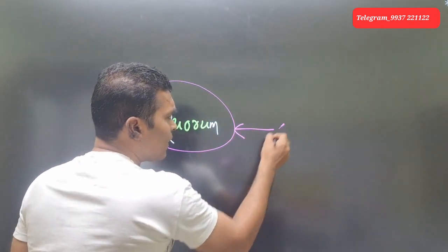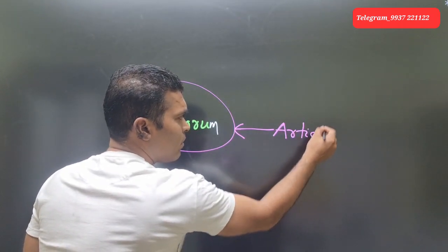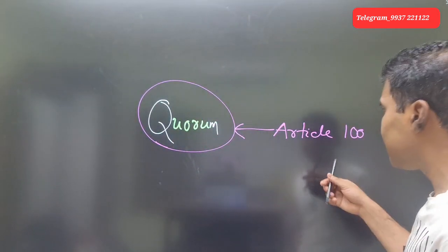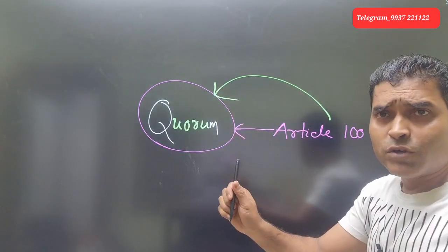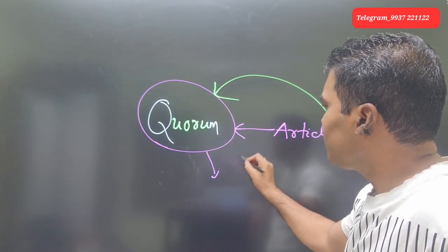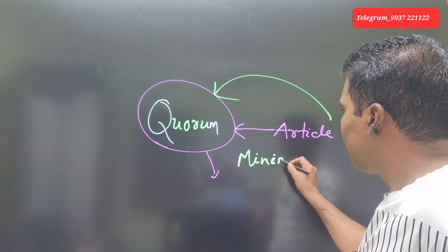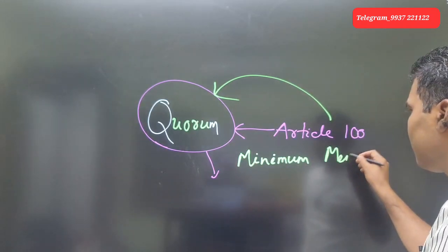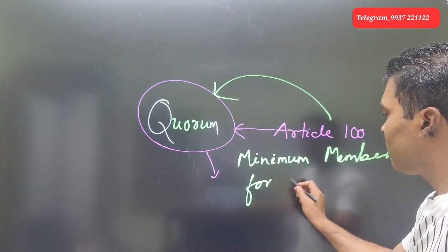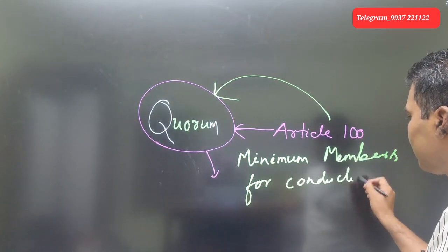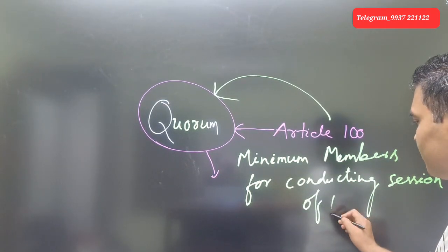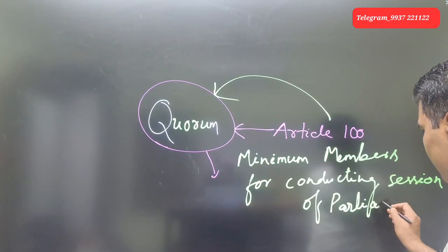Actually, Article 100 of Indian constitution says about quorum. This is the point you should remember. What is quorum? Quorum is the minimum members for conducting session of parliament.